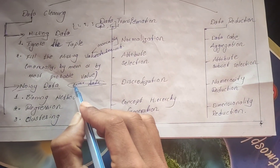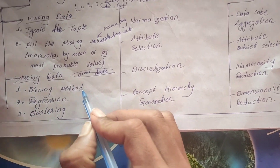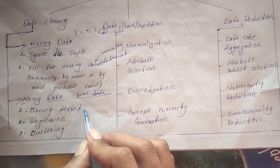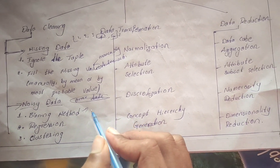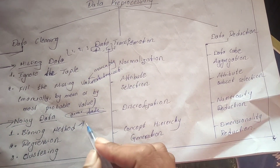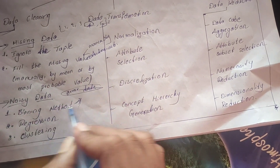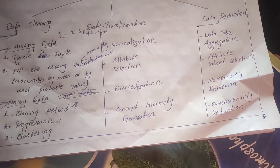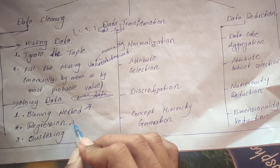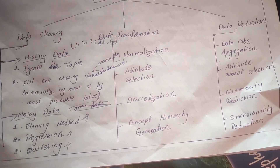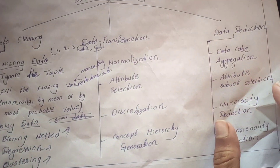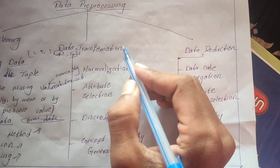Noisy data means data that is not relevant or contains errors. Methods to handle noisy data include the binning method, regression, and clustering. In the binning method, smoothing is done — smoothing by mean, smoothing by median, or smoothing by bin boundary. Regression predicts numeric values using previous data, and clustering groups similar data items together.